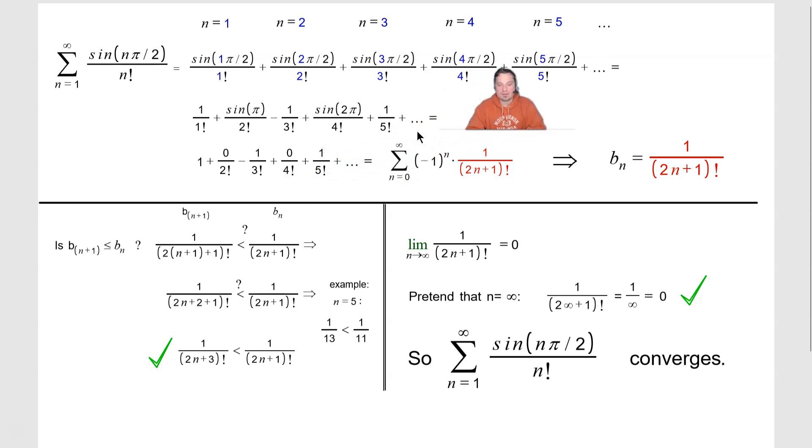Next one plus sine of 5 pi over 2. Sine of 5 pi over 2 over 5 factorial. Sine of 5 pi over 2 is just positive 1, so it becomes plus 1 over 5 factorial, plus dot dot dot to indicate that you would continue that pattern.